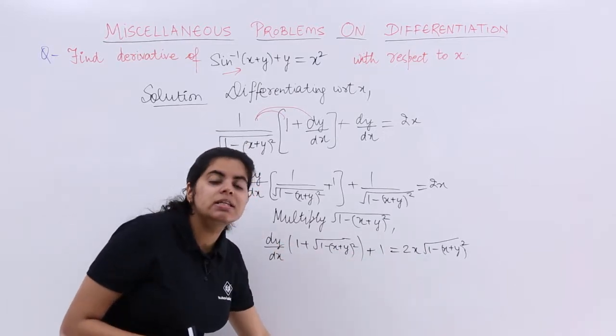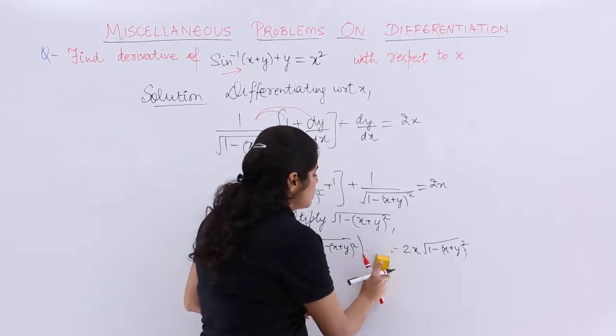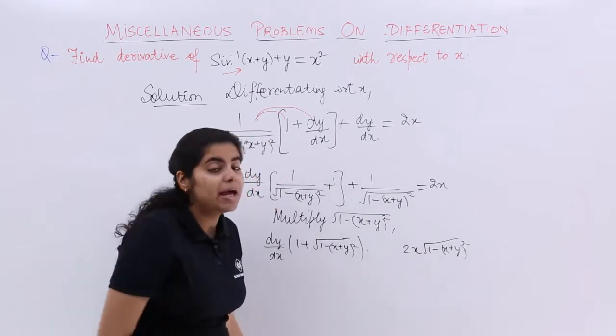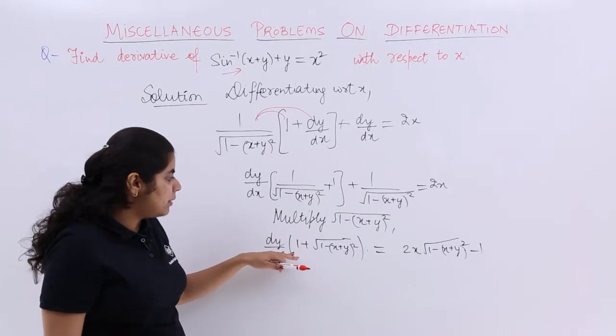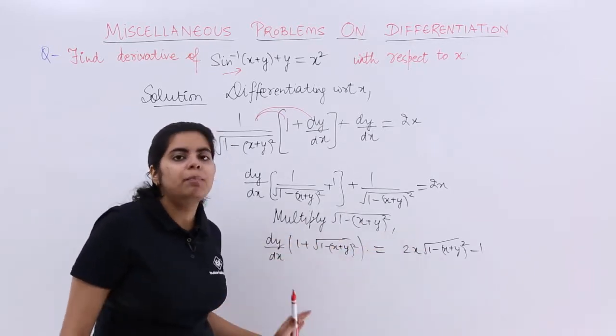And the plus 1 is here, it is a constant. Let constant be on one side. So I remove plus 1 from here and I make it minus 1 there. So it is nothing but minus 1.